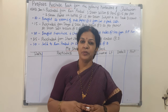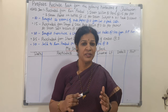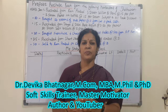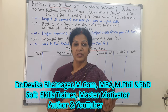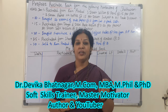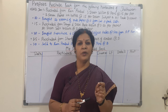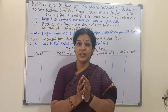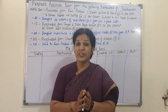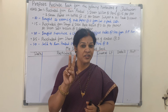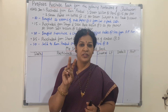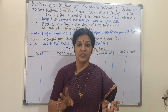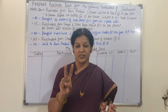Hello dear students, welcome to financial accounting classes for beginners. Today we'll see the purchases account and purchase book — how do we prepare this. In subsidiary books we have already discussed the cash book, which is three types: single column, double column, triple column. Now we'll see the purchase book. Remember: in the purchase book we write only transactions related to goods purchased on credit basis. If any asset is purchased or cash purchases are made, we don't consider those.